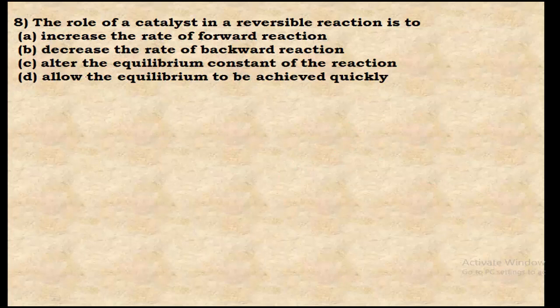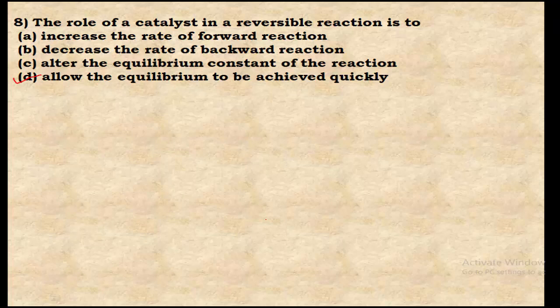Question 8: What does a catalyst do? It allows the equilibrium to be achieved quickly. When reactants A and B form product C, without catalyst the reaction proceeds slowly; upon addition of catalyst, equilibrium is achieved more rapidly since the rate of forward reaction equals rate of backward reaction faster. Option D is the correct answer.